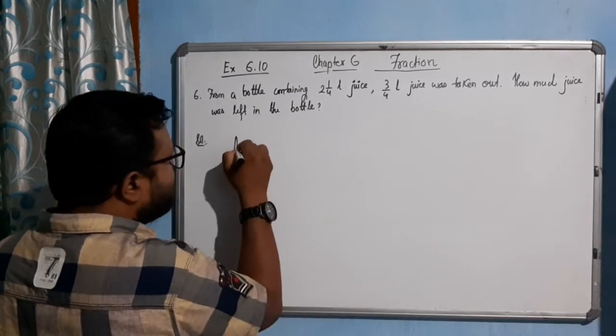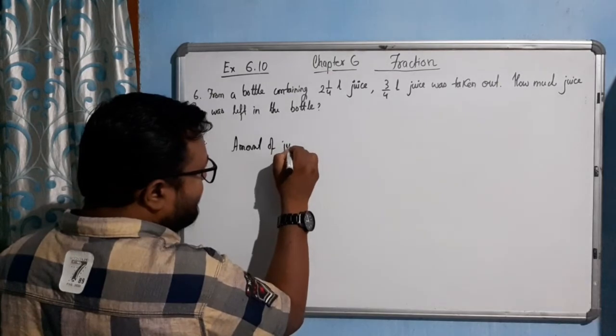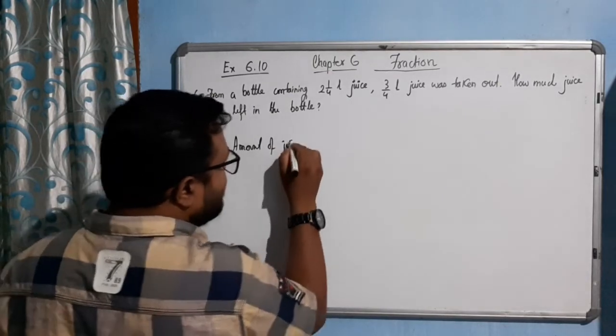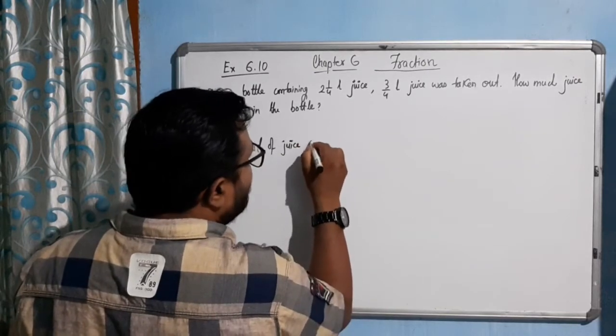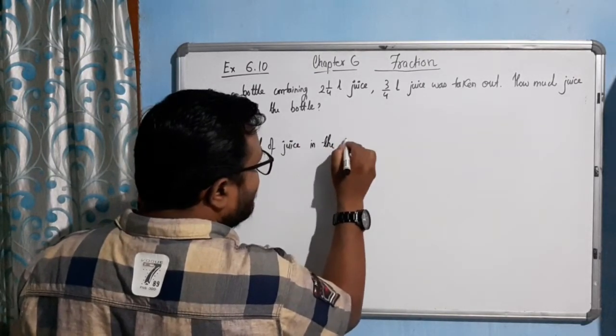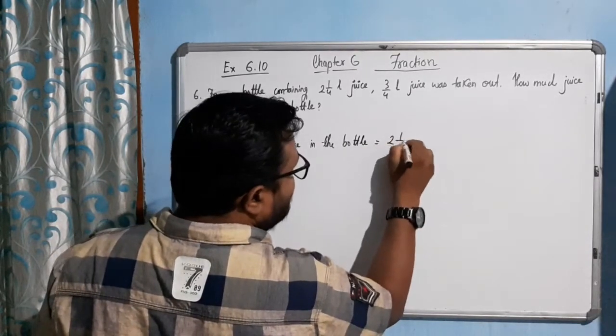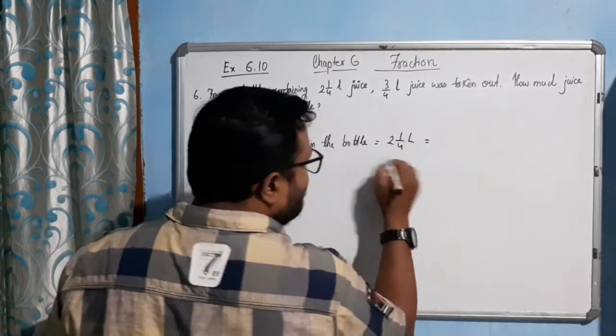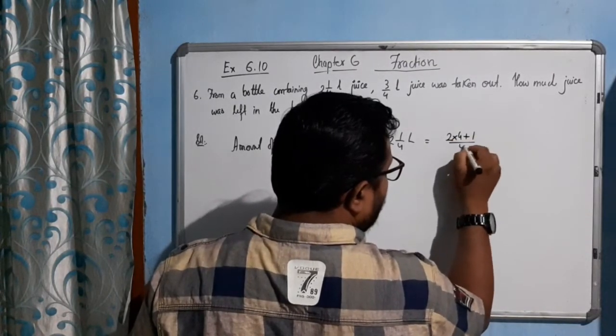Solution: The amount of juice in the bottle equal to how much? 2 1/4 liter. We will convert this: 2 into 4 plus 1 by 4 equal to 4 to 8 plus 1, 9 by 4 liter.